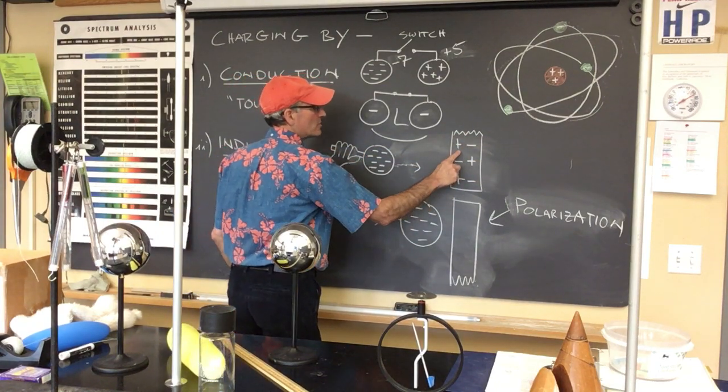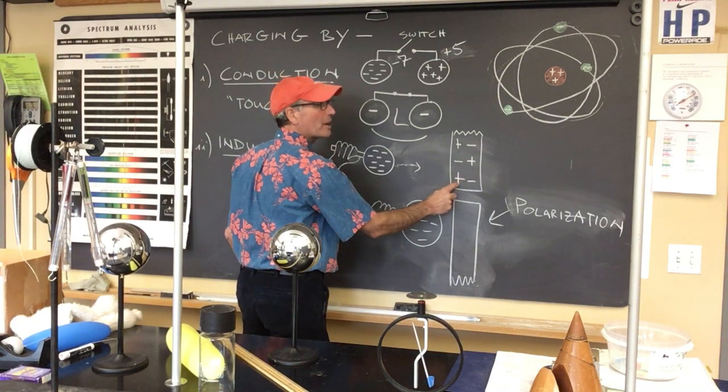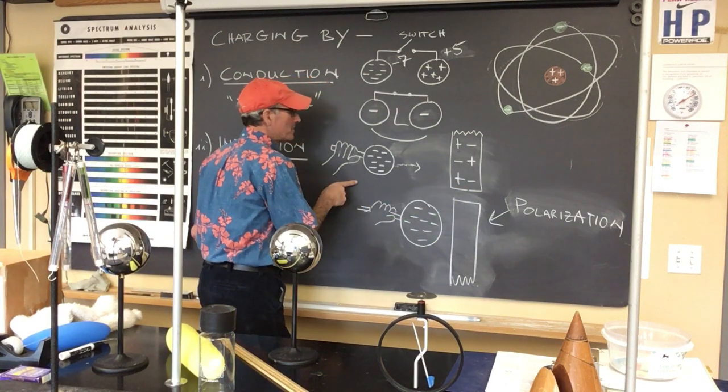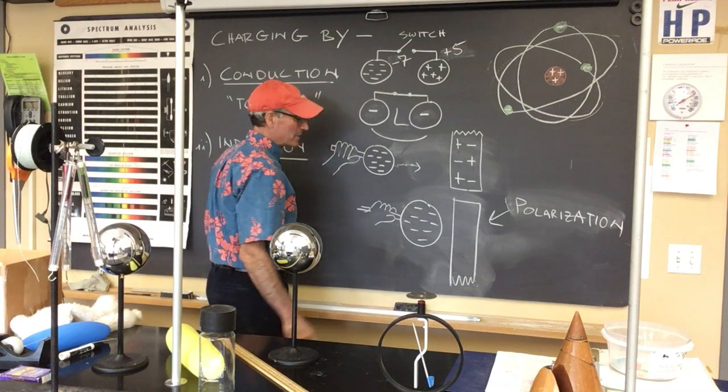Now, the meter stick shows a neutral arrangement of the charges. Positive, negative, negative, positive, positive, negative. Now, if we bring this object that has a net negative charge close to the meter stick, this is what happens.